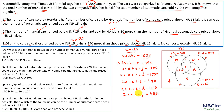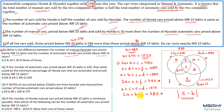Question 1 asks for the difference between manual Hyundai cars priced below 15 lakhs (region e) and automatic Honda cars priced above 15 lakhs (region b). Subtracting the equation 2a + b + f = 480 from 2a + e + f = 490, the left side gives e − b = 10. Answer: 10.